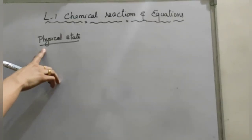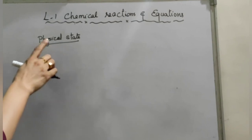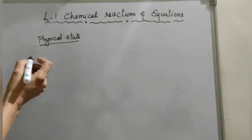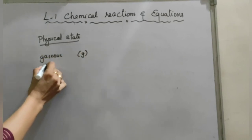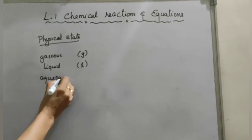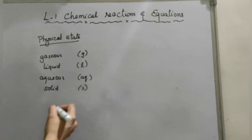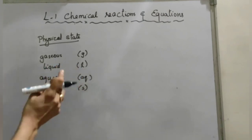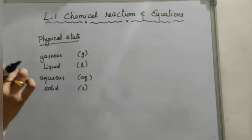Next, we need to mention the physical state to make a chemical equation more informative. The physical states of reactants and products are mentioned along with the chemical formula. Gaseous state is represented as (g), liquid as (l), aqueous as (aq), and solid as (s). Examples of gases include hydrogen, oxygen, sulfur dioxide, and chlorine. Water comes in liquid form (l).